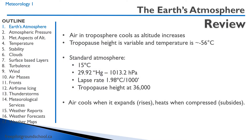Air in the troposphere cools as altitude increases. The tropopause height is variable and the temperature is minus 56 degrees Celsius. The standard atmosphere is 15 degrees Celsius, 29.92 inches of mercury, 1,013.2 hectopascals, a lapse rate of 1.8 degrees Celsius per thousand feet, and a tropopause height of 36,000 feet. Air cools when it expands or rises, and heats up when compressed or subsides.